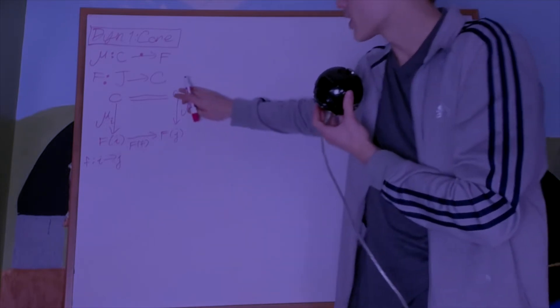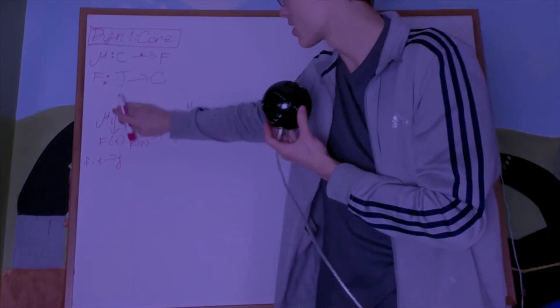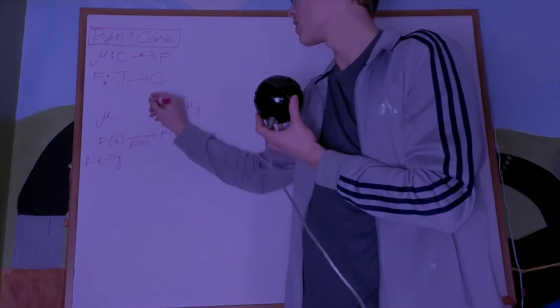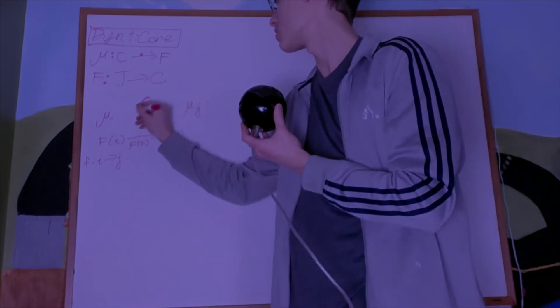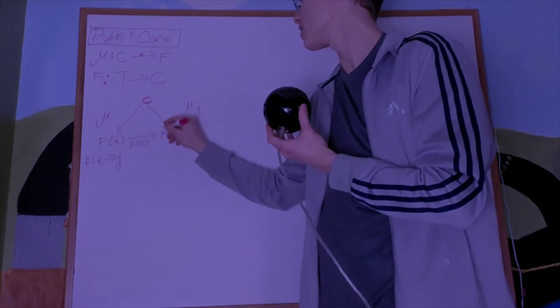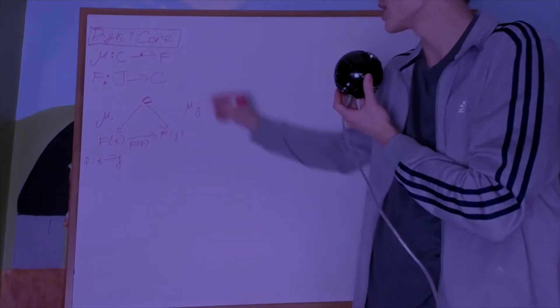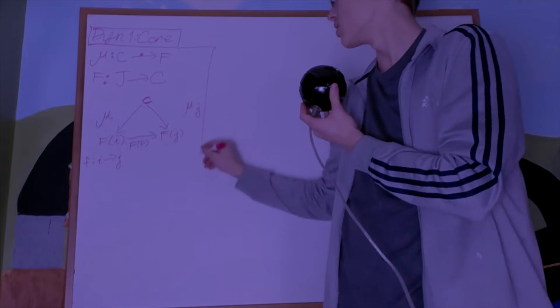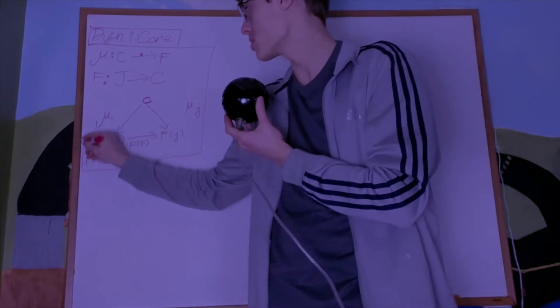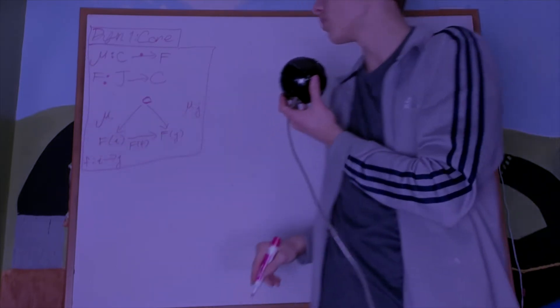So really, I could have drawn the diagram to look like this, like a big cone, which is why it's called a cone. And that diagram commutes for every single one of those.